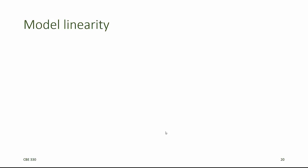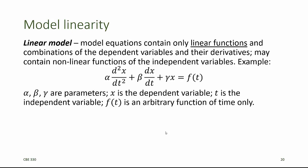Another way that models can be classified is according to their linearity. A linear model equation contains only linear functions and combinations of the dependent variables and their derivatives. Linear models may contain nonlinear functions of the independent variables. For example, if alpha, beta, and gamma are constant parameters and x is our dependent variable with time as the independent variable, then this model represents a linear, second-order, ordinary differential equation. It's linear because x and its derivatives, dx/dt and the second derivative of x with respect to t, only appear in linear combinations of terms. It doesn't matter what form the function f(t) is on the right-hand side, because t is the independent variable, and the independent variable does not need to be linear for us to have a linear model equation. Only the dependent variable and its derivatives need to appear in linear terms.